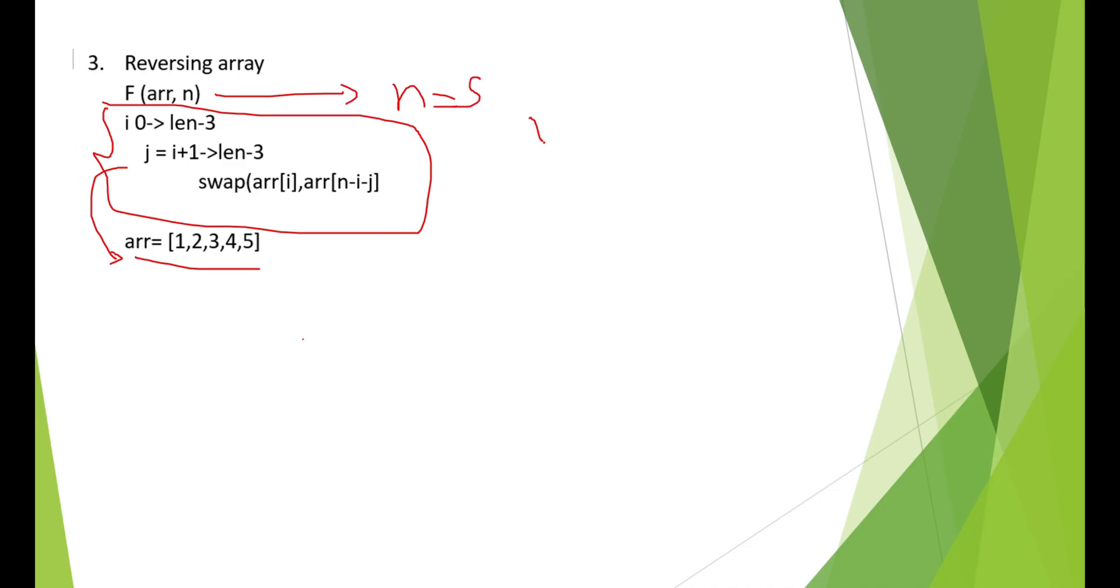And do the looping part. Like, i should go from 0 to len minus 3. So len is 5. So len minus 3 will be 2. And j will start from i plus 1. Then i plus 1 to len minus 3. That is 2. Then perform the swapping operations. Swapping of ARR of i and ARR of n minus i minus j. And then finally return the array. Modified array as the answer.